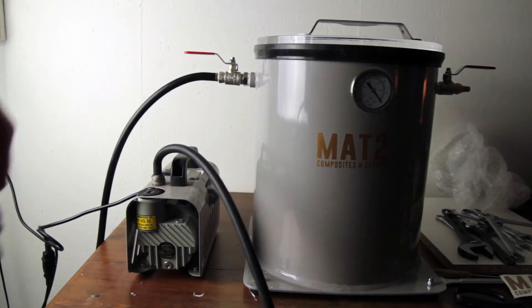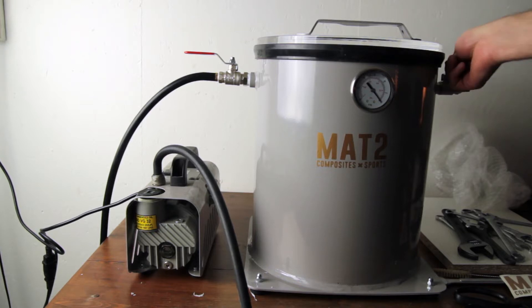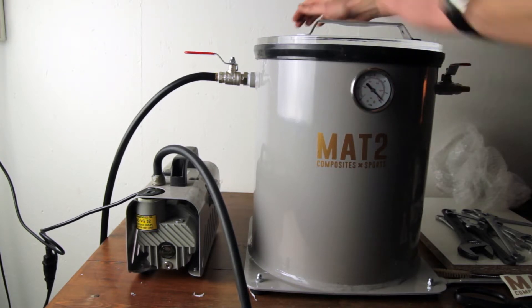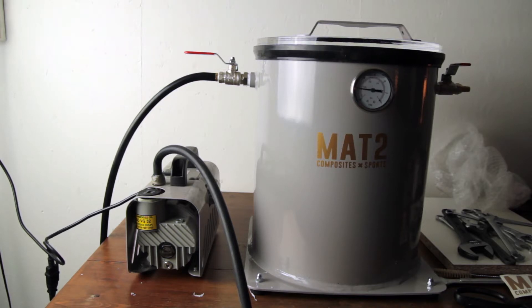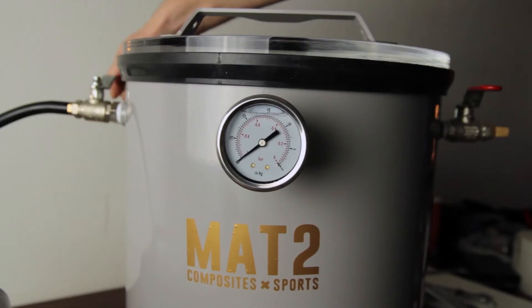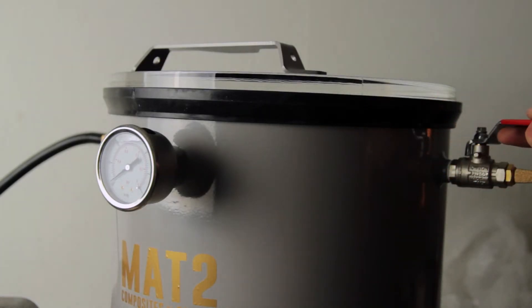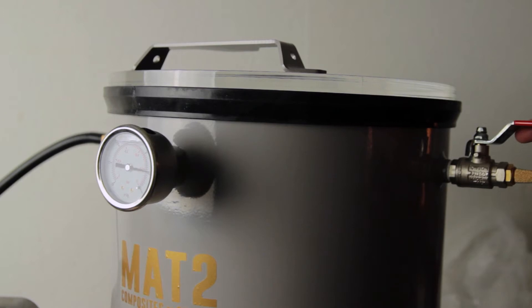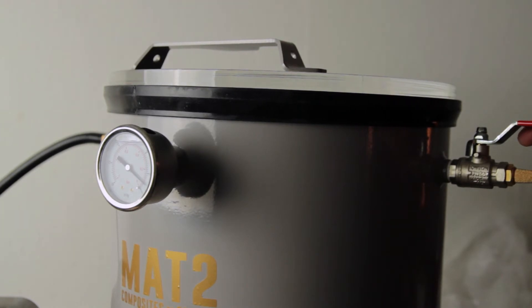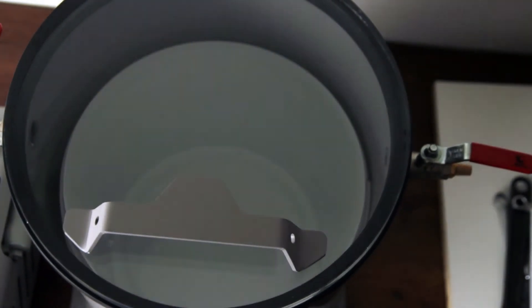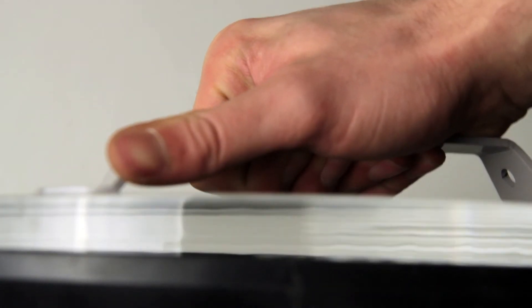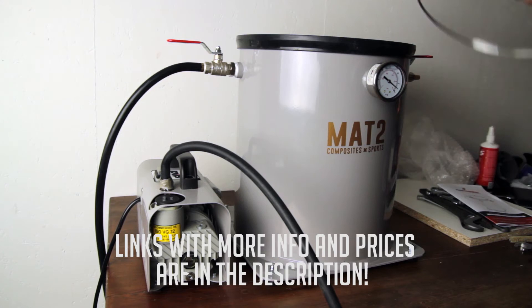So this is a 26 liter degassing chamber. I'm just connecting the EC4 pump - Easy Composite sells this as a kit as well. I already had the pump. So the EC4 pump will remove all the air, 99% vacuum, in about three and a half minutes. If you have some spare money to spend on this, I would highly recommend buying the bigger EC20 pump with this system because you can remove the air in about 30 seconds to 99%.